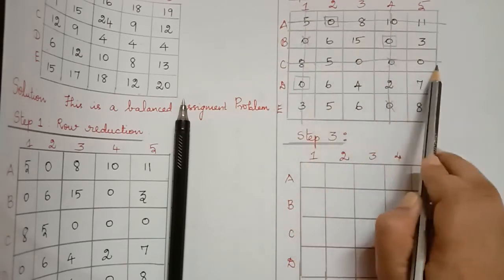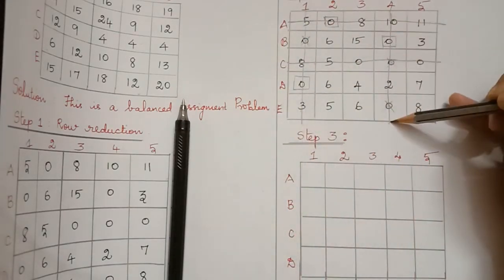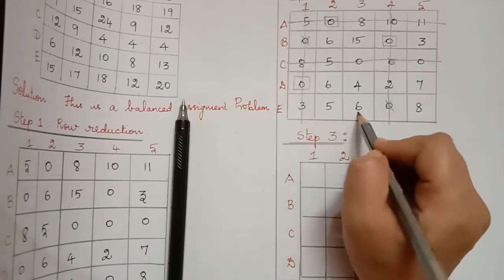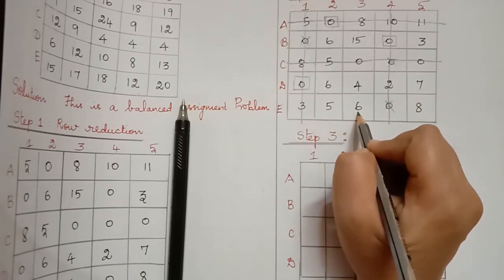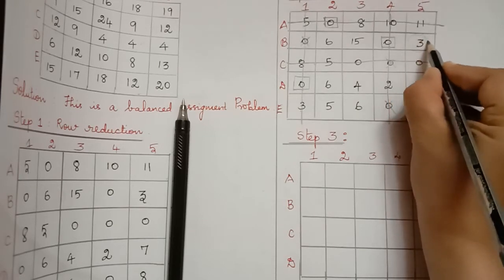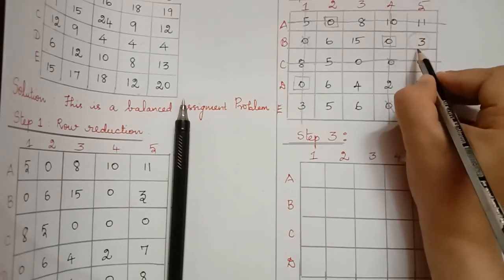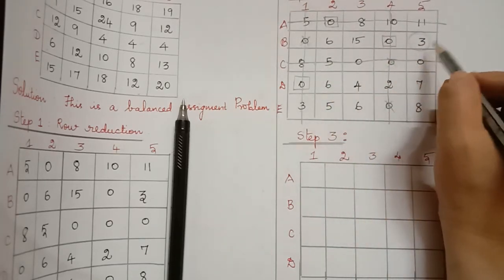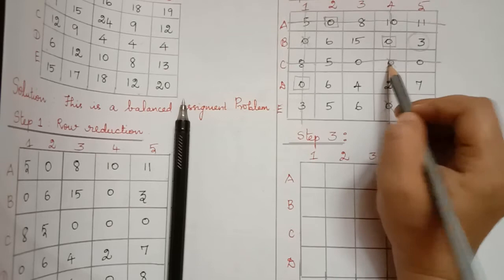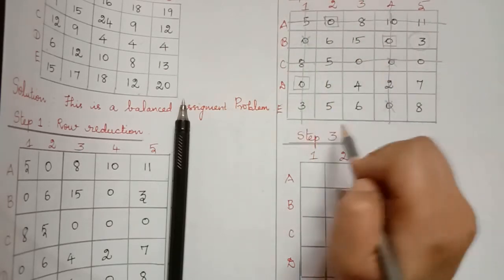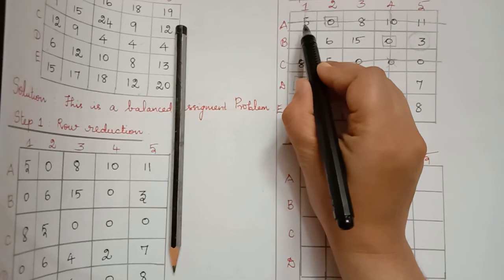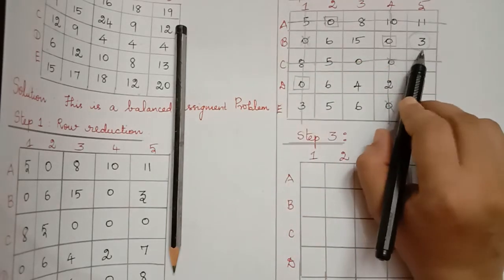The four lines are drawn. Elements not covered by any line are called uncovered elements. From the uncovered elements we select the minimum, which is 3. This value of 3 must be subtracted from all uncovered elements and added to the points of intersection. Covered elements that are not at intersections remain the same.